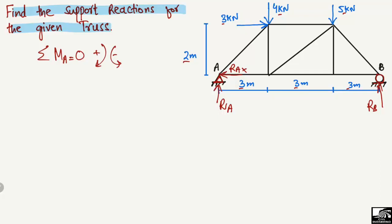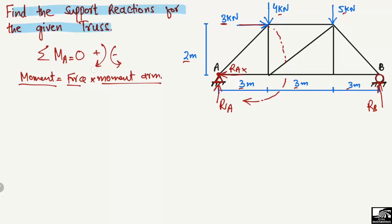We will take all moments at point A equal to zero. Moment equals force multiplied by moment arm. The first force that creates a moment about point A is the 3 kilonewton load. It acts in a direction that creates a clockwise moment about point A, so it is taken as positive: 3 multiplied by 2 meters, which is the perpendicular distance from that load to point A.